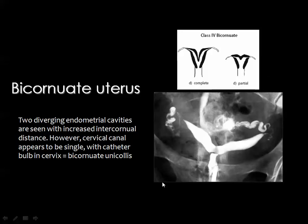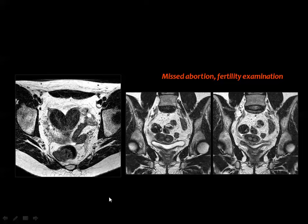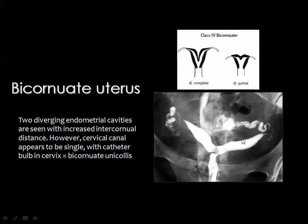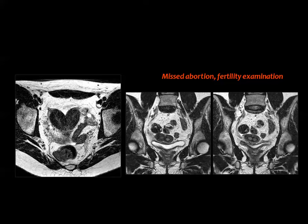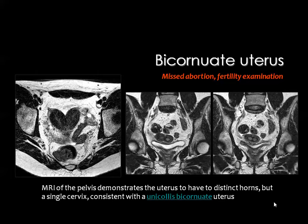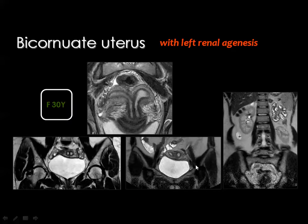In bicornuate unicollis uterus, a single cannula introduced into the single cervical canal opacifies both uterine bodies. Another example shows some fusion between the bodies of the uterus with two separate cervical canals visible, consistent with bicornuate bicollis uterus. Renal anomalies may coexist, such as a single kidney showing compensatory hypertrophy due to absence of the contralateral kidney.